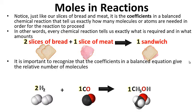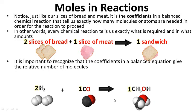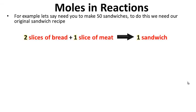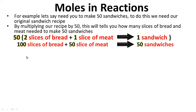It is important to recognize that the coefficients — two, one, and one — in a balanced equation give the relative number of molecules. We can multiply this balanced equation by any number and still have a balanced equation. For example, to make 50 sandwiches, multiply the recipe by 50: you need 100 slices of bread and 50 slices of meat to make 50 sandwiches.